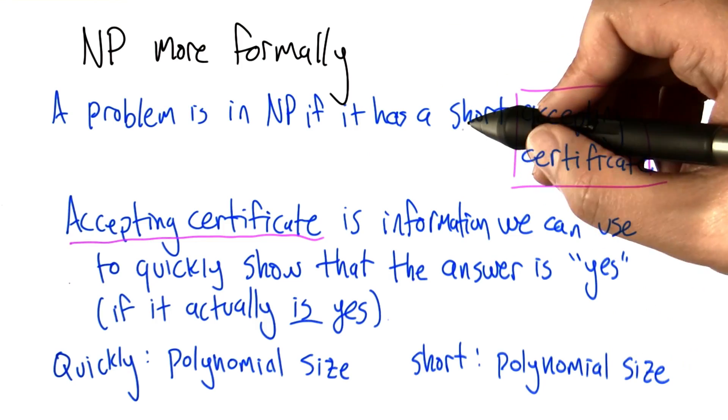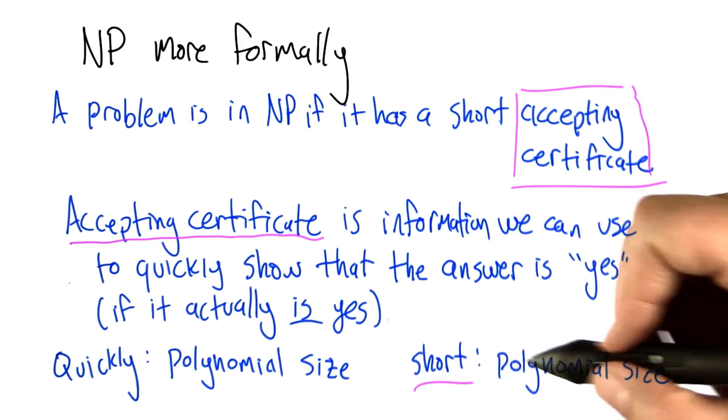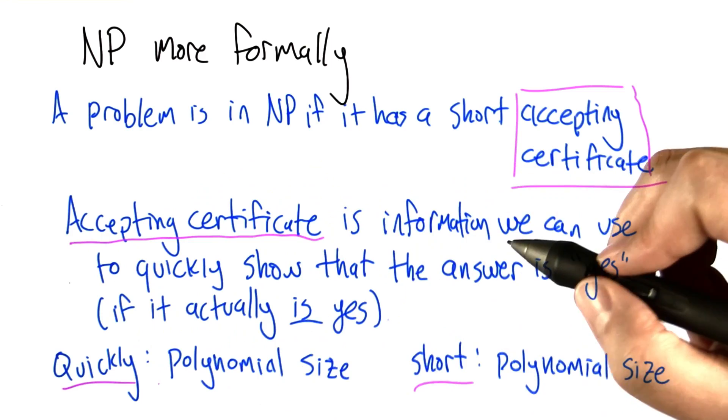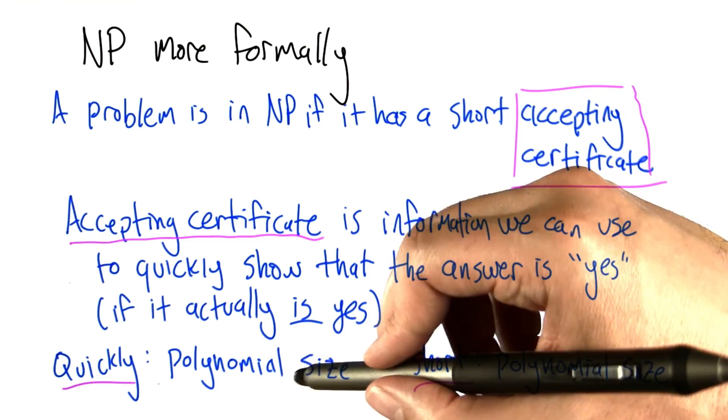Here short means polynomial size and quickly means polynomial time. So to define NP even more formally,